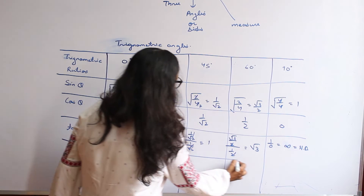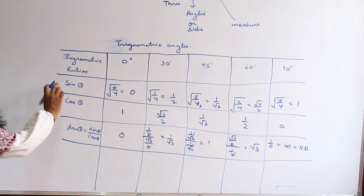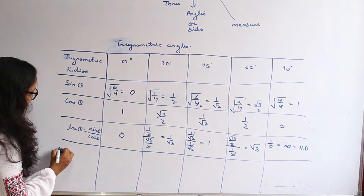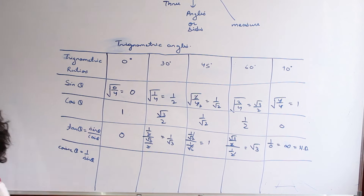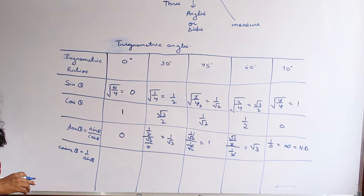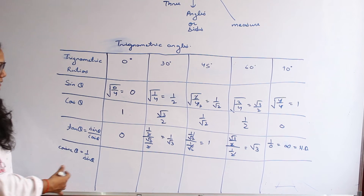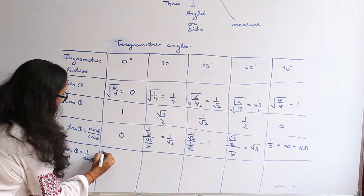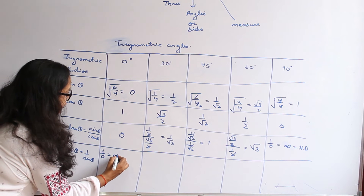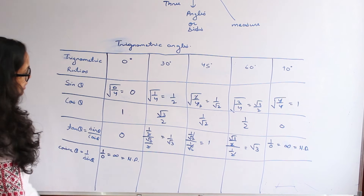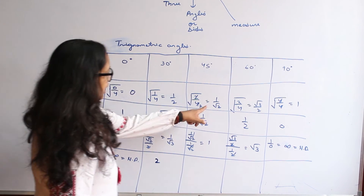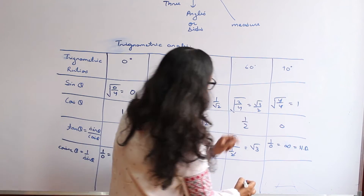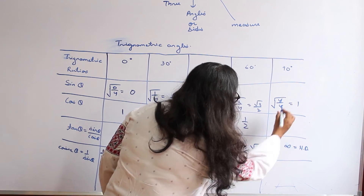After tan theta comes cosecant theta, which is the inverse of sin theta. Inverting the sin values: at 0° it becomes 1 over 0 — not defined; then 2, root 2, 2 over root 3, and at 90° it comes out to be 1.